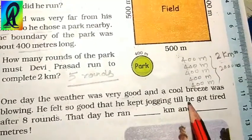So how many rounds should Devi Prasad complete of this park to complete 2 km? The answer to this question is 5 rounds. And next, one day the weather was very good and a cool breeze was blowing. He felt so good that he kept jogging till he got tired after 8 rounds.